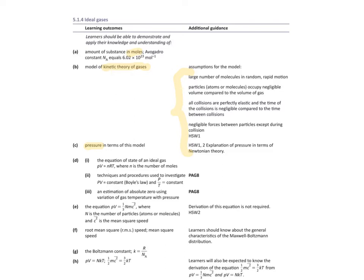To start with today, we're going to look at the equation of state of an ideal gas and how we get to that stage. I'll break it down first into PV equals a constant and PT equals a constant. You need to know the techniques and procedures used to investigate them — how to do the practical work and how to ensure it's as accurate as possible. We'll also cover how to use those results to obtain absolute zero, and look at the root mean square speed and mean square speed.